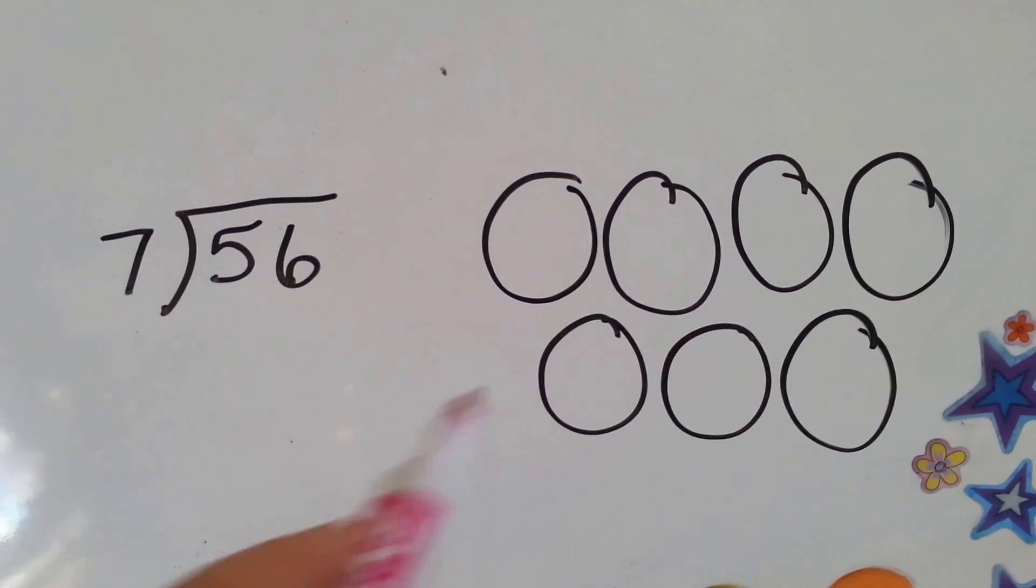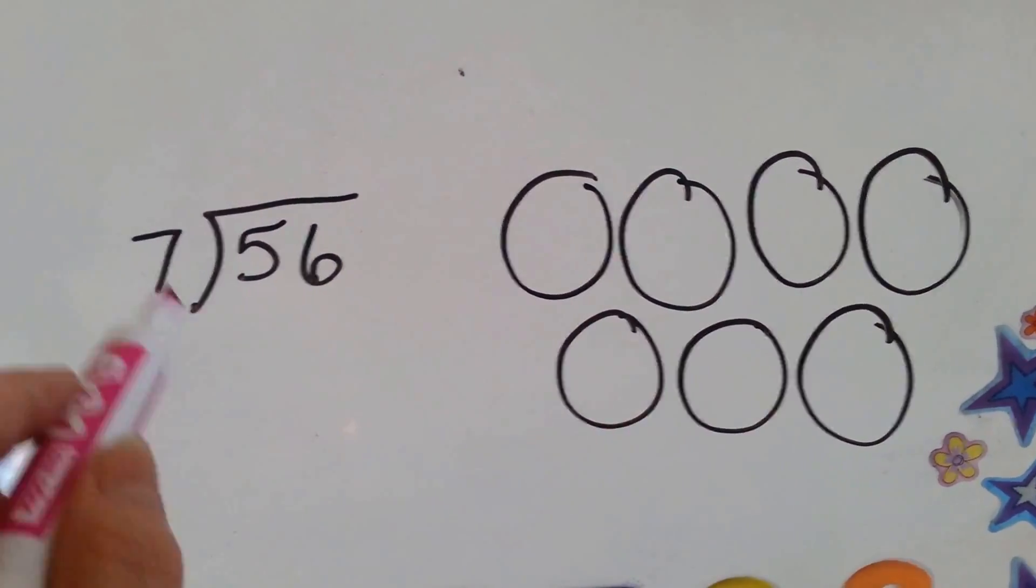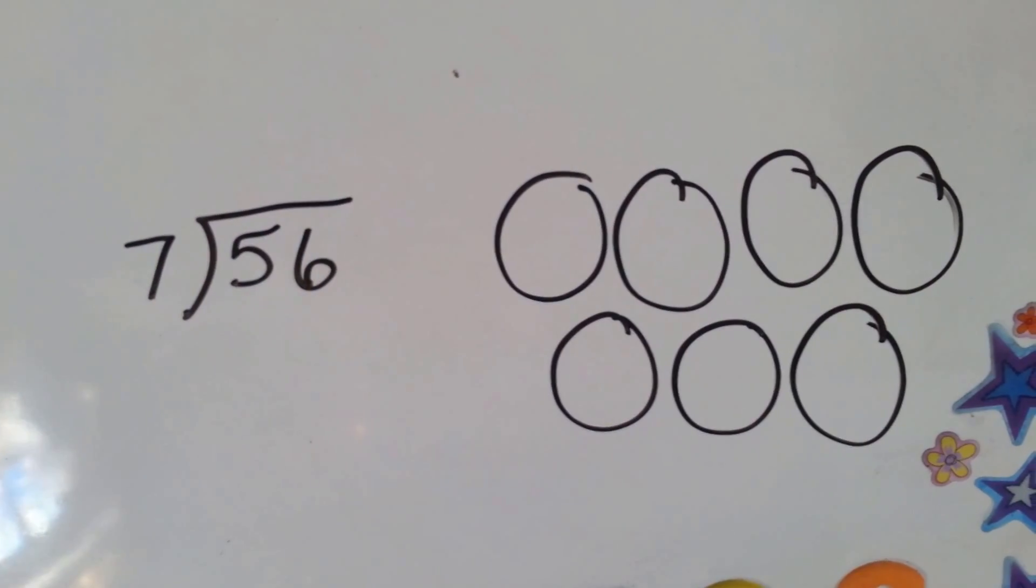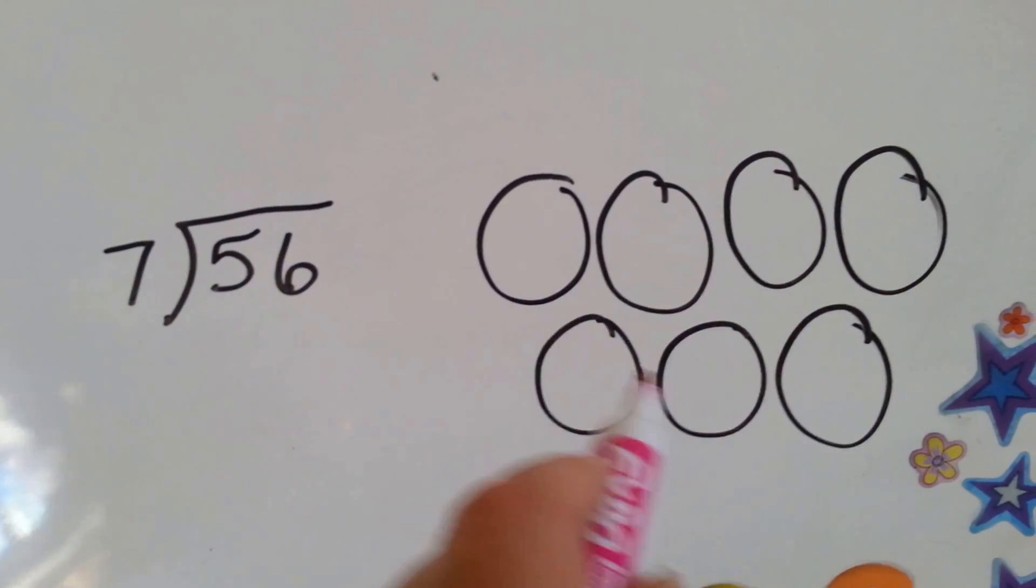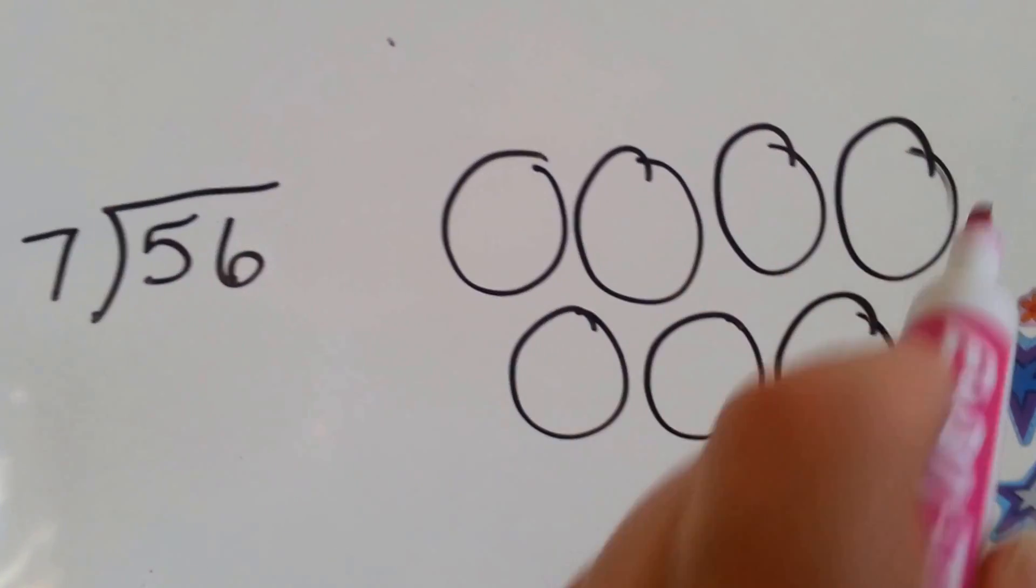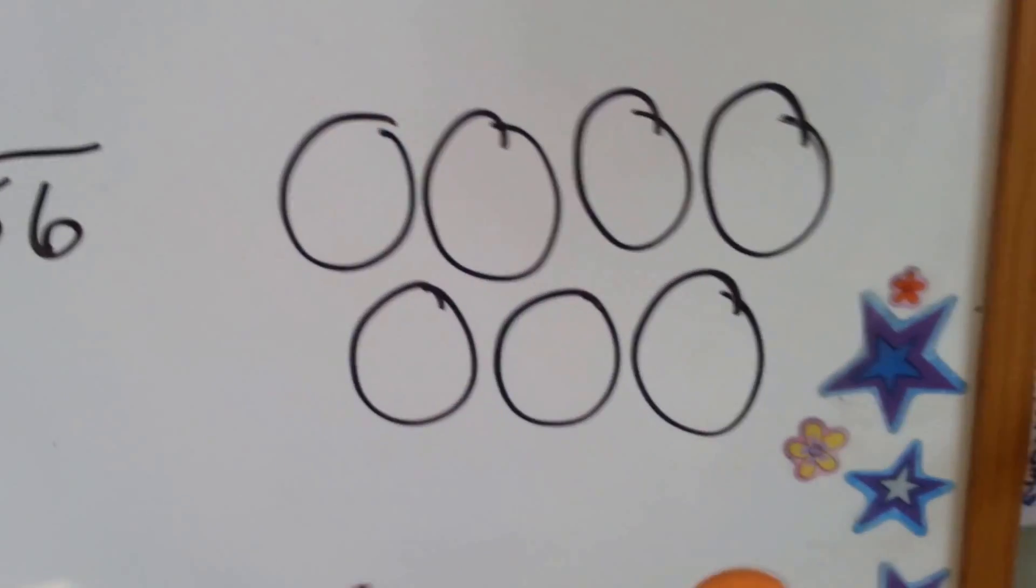Now we're going to do the circles again to do 7 goes into 56. We've got 7 groups and we're going to count and take turns going to the number 56. Are you ready?